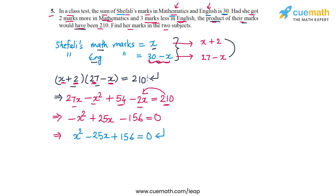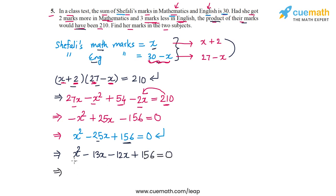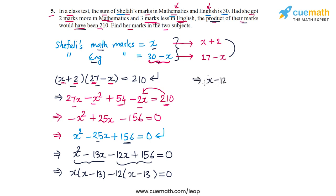This is the quadratic equation that models the given situation. Let's solve it by splitting the middle term. Since 156 equals 13 times 12, and 13 plus 12 equals 25, we split minus 25x as minus 13x minus 12x. Factorizing the first pair gives x times (x minus 13), and from the second pair we take out minus 12, giving (x minus 13) again. So the equation factorizes as (x minus 12)(x minus 13) equals 0.